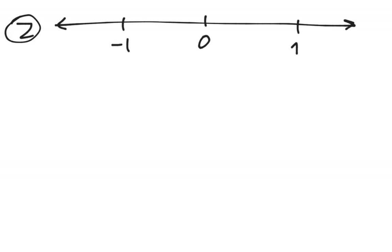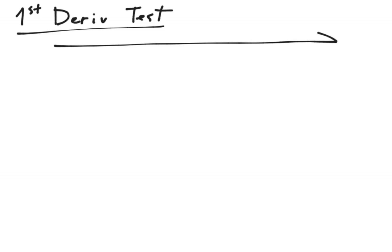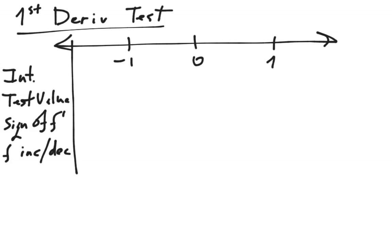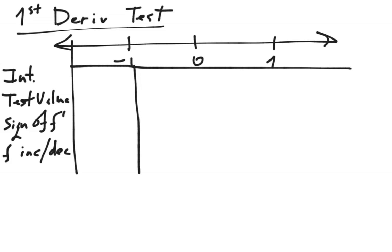To start the first derivative test, we take that number line and transform it into a chart. The chart has four columns: the intervals, a test value for each interval, the sign of f prime, and whether f is increasing or decreasing. At each critical number, that will be the beginning and end of each interval. So our intervals are: negative infinity to negative 1, negative 1 to 0, 0 to 1, and 1 to positive infinity — all open intervals.